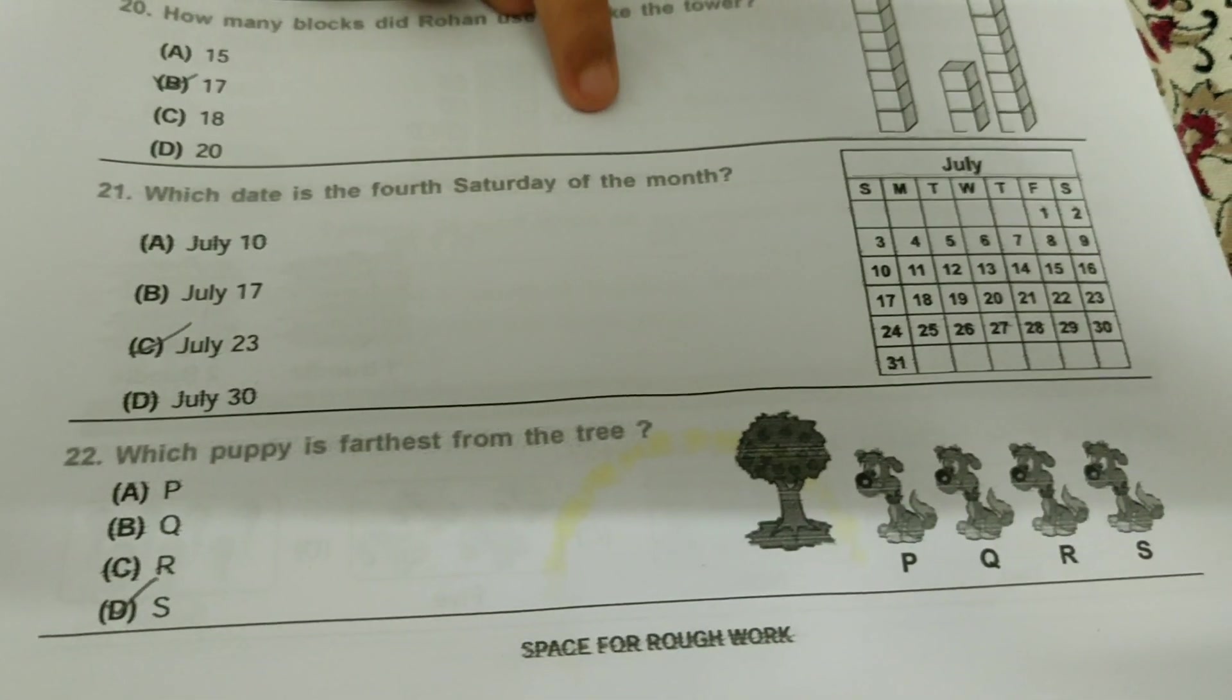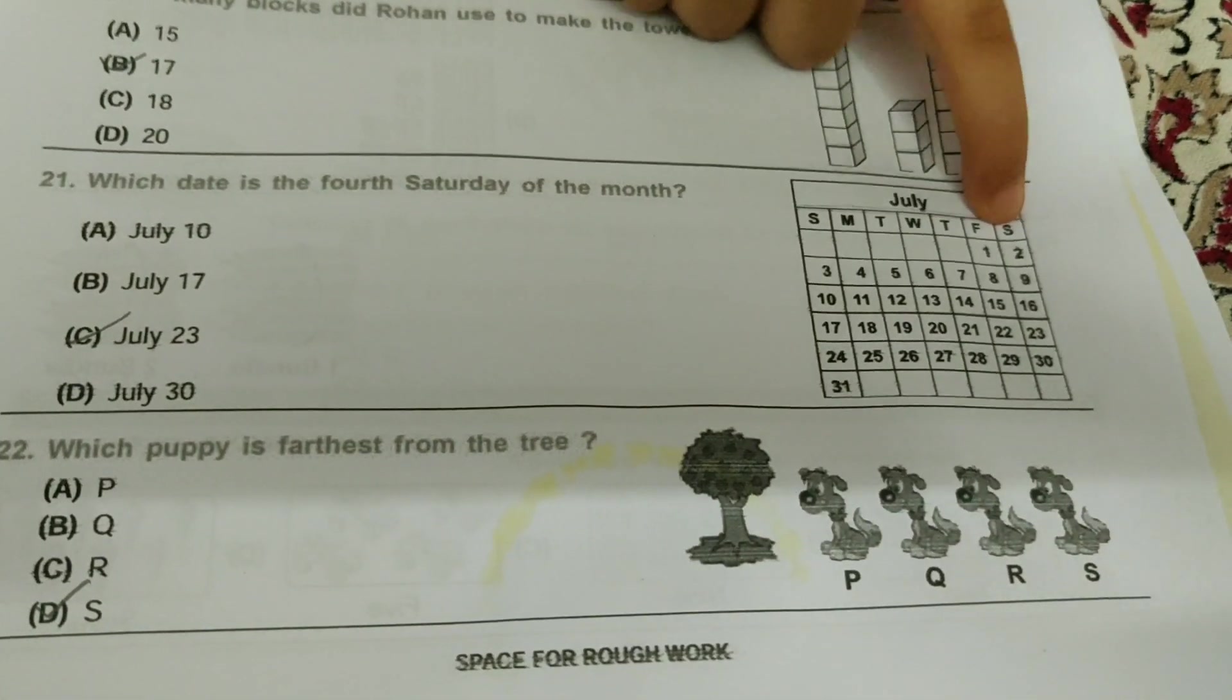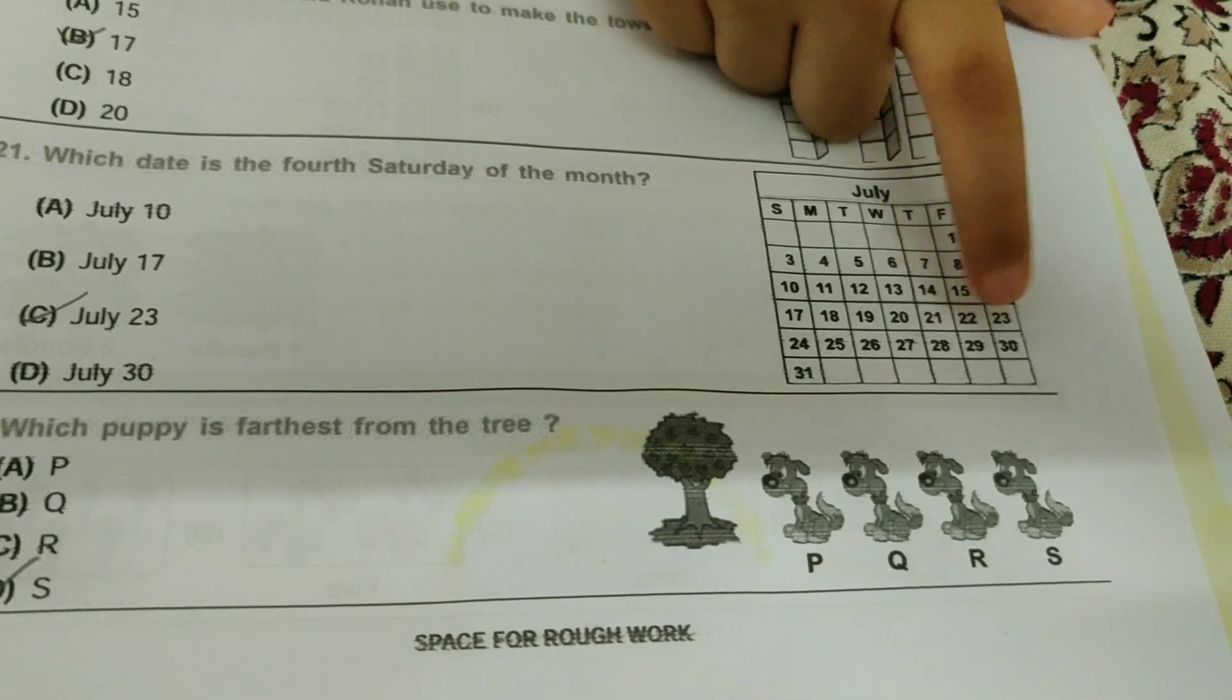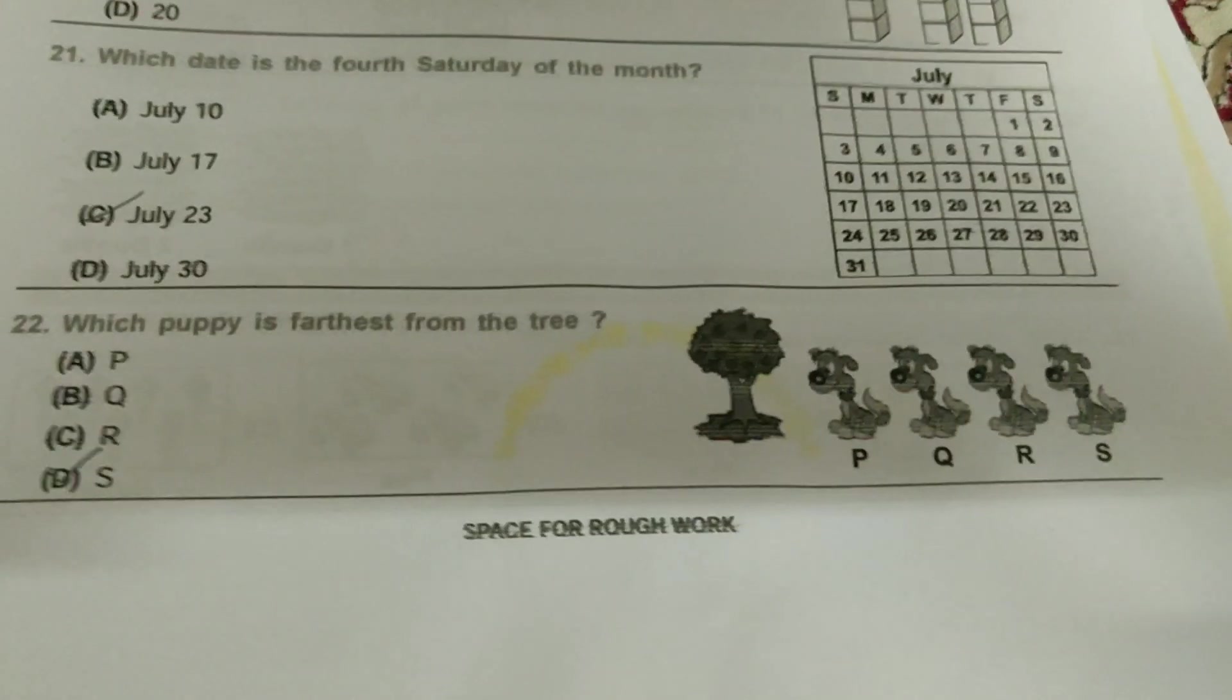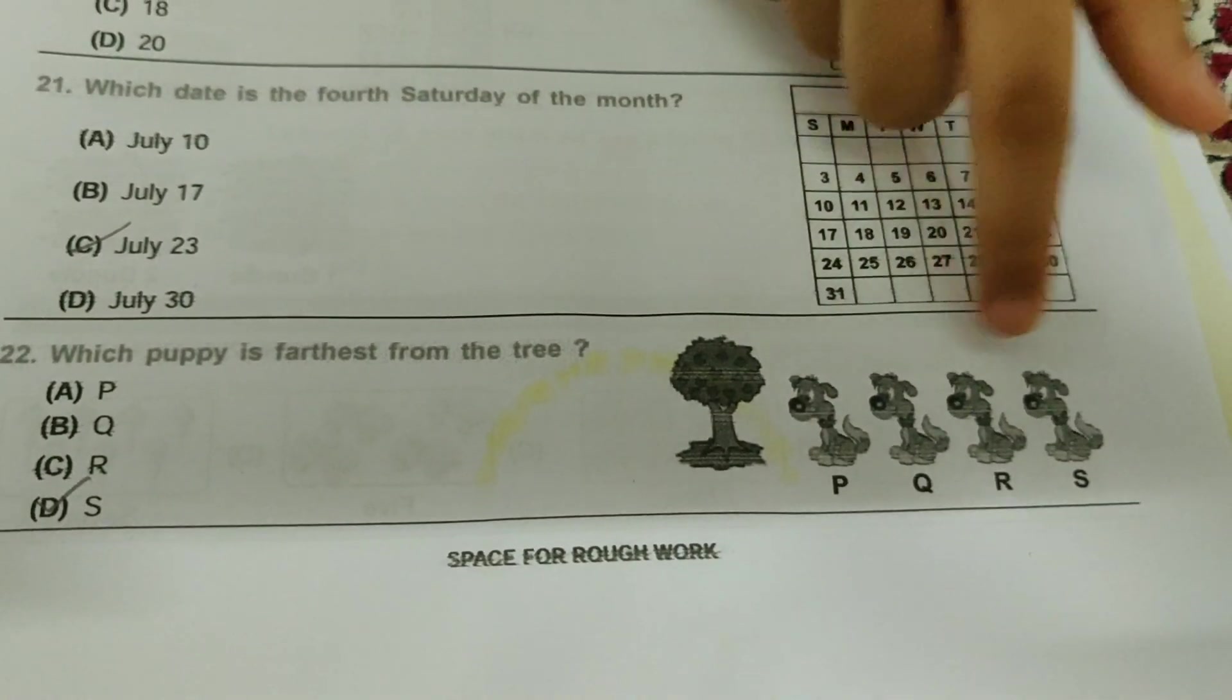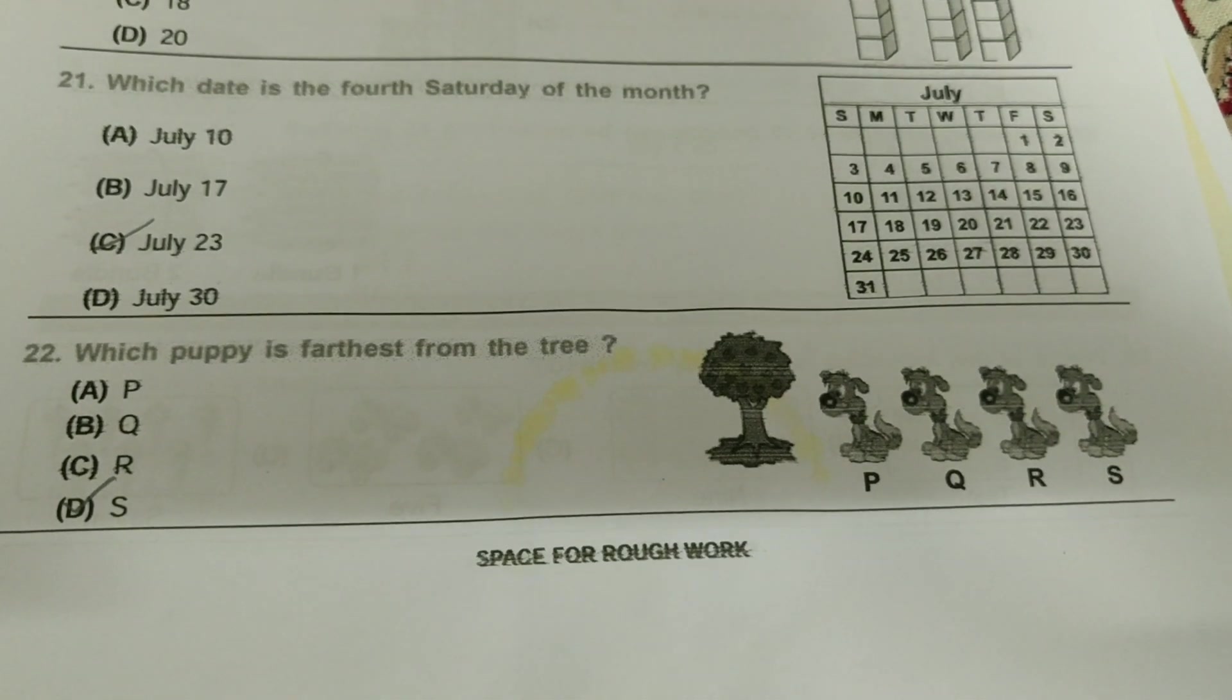Which date is the 4th Saturday of the month? So it's July, so obviously there will be July in the starting. So let's see. Here's Saturday and we need to find 4th Saturday. 1st, 2nd, 3rd, and 4th. So 23rd, July 23rd. Which puppy is farthest from the tree? So 4 puppies are in line and they have, you can imagine as it's their name, P, Q, R, S. And S is farthest from the tree. So it's D.